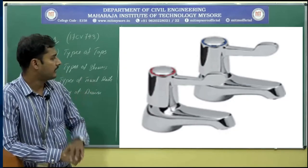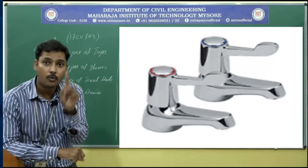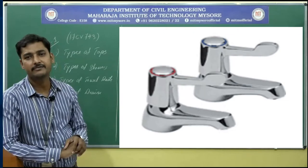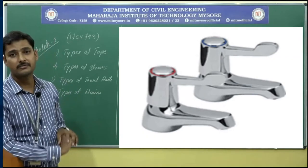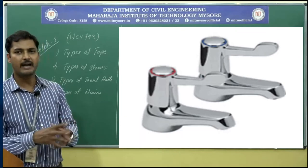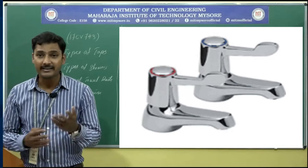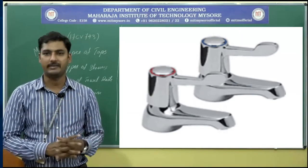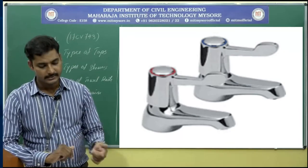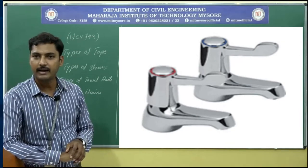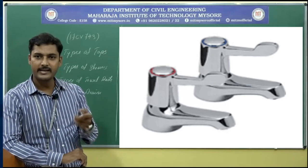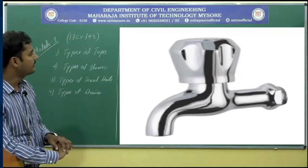The second material-based type is quarter turn taps. As the name says, the tap must be rotated exactly 90 degrees to operate. These types of taps are preferred in canteens, institutional buildings, laboratories, and factories where operation must be quick and efficient. The tap is connected to a lever arm, and it can be operated by hand or even by using an elbow, making it convenient for busy work environments.